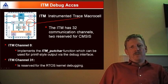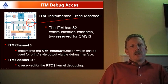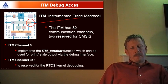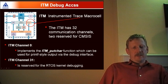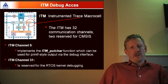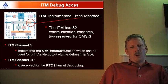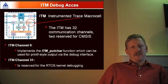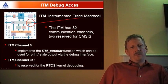Another very interesting area of CMSIS is its solutions for debugging. The ITM debug access port provides 32 channels. CMSIS defines channel 0 as an ITM_PutChar function, enabling printf-style debugging. Channel 31 is reserved for RTOS kernel debugging. An example is available on the ARM website to download and see how this works.